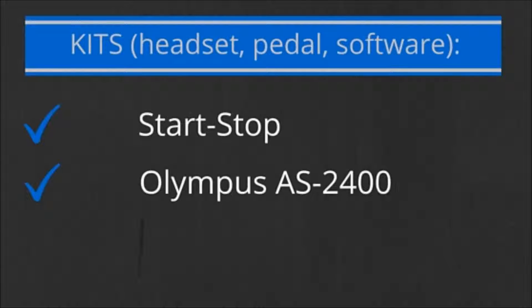Two kits I've come across that include the headset, the foot pedal, and the software are from companies called Start Stop and Olympus. These kits come at a single price ranging from around $170 to $200. The links for these will also be in the blog.